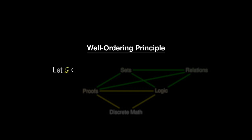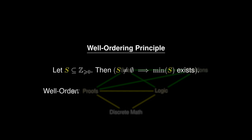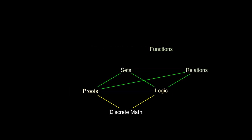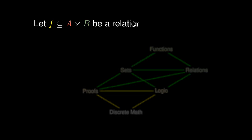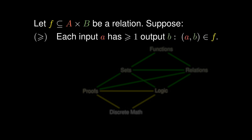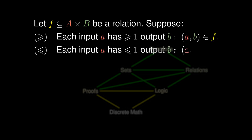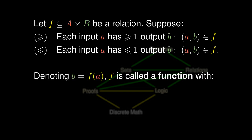Let S be a subset of the non-negative integers. Then if S is non-empty, it must have a minimum element. It turns out that the well-ordering principle is logically equivalent to the principle of mathematical induction. Relations are also used to define functions. Let F be a relation from A to B, and suppose each input has at least one output and each input has at most one output. Denoting b equals F of a, we call F a function from A to B.